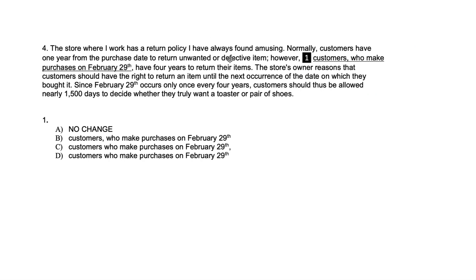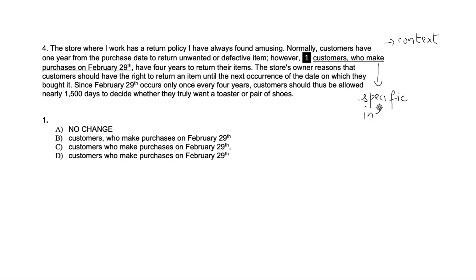Next example: 'The store where I work has a return policy I have always found amusing. Normally customers have one year from the purchase date to return unwanted or defective items. However, customers who make purchases on February 29th have four years to return their items.' The context here is that we have two kinds of customers — normal customers and the exceptional customer who makes a purchase on February 29th. Although we have a W-word ('who'), this is very specific information, and whenever you have specific information, it is essential — it cannot be extra.